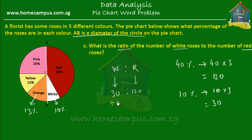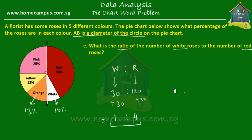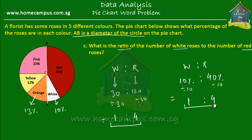Shall we reduce this ratio? We can divide each of these by 30. Divide 30 by 30, you get 1, and divide 120 by 30, you get 4. So the ratio of the number of white roses to the number of red roses is 1 to 4. There's another way of finding this — instead of finding the total numbers, you can use the percentages directly. White to red is 10% to 40%. Divide each by 10: 10 divided by 10 is 1, and 40 divided by 10 is 4. You get the same ratio, 1 to 4.